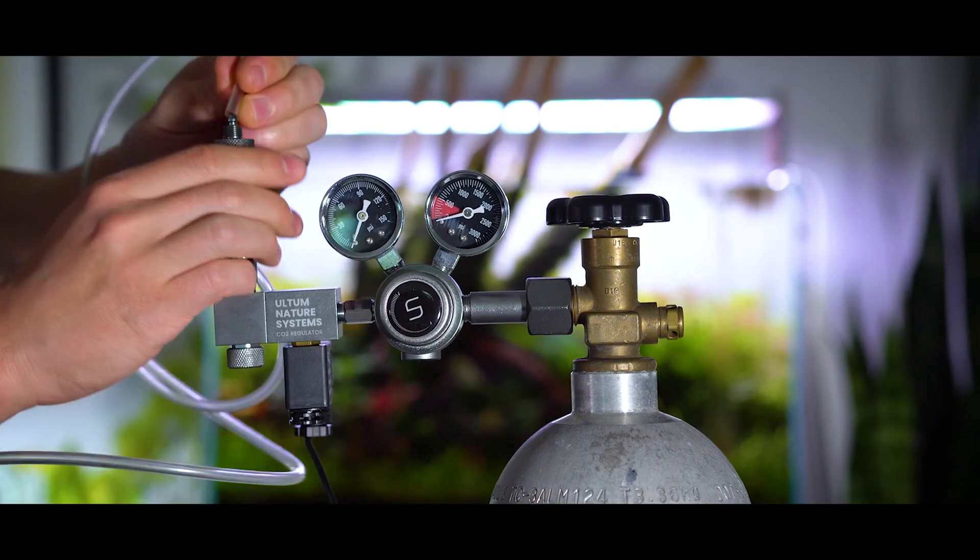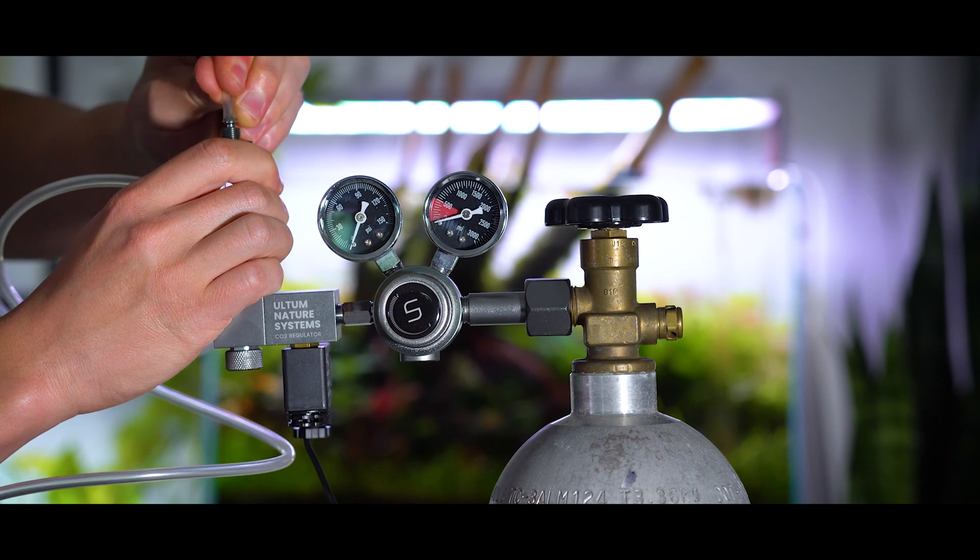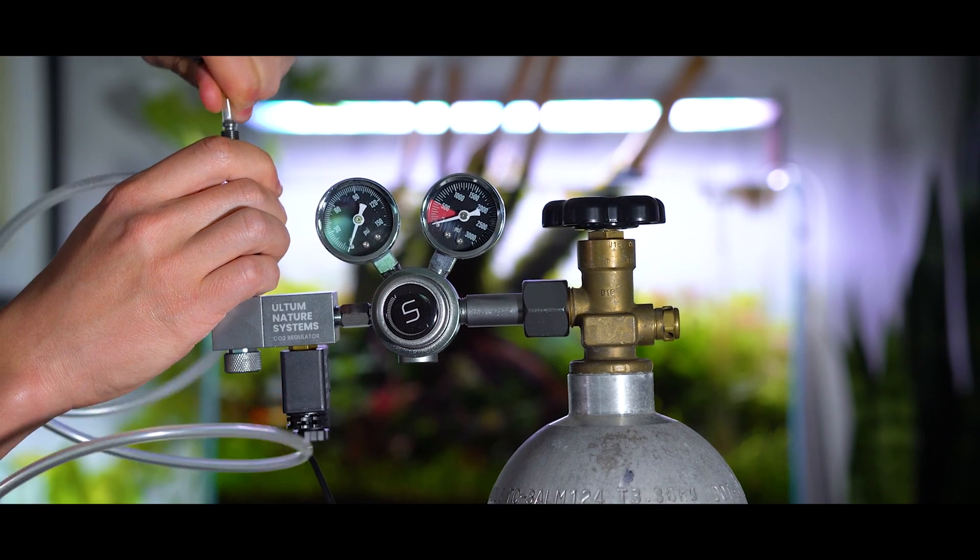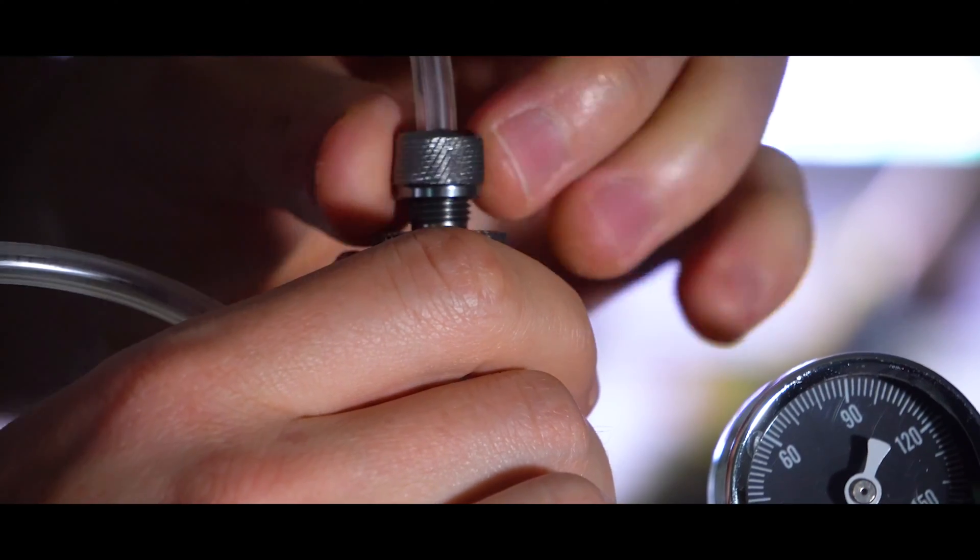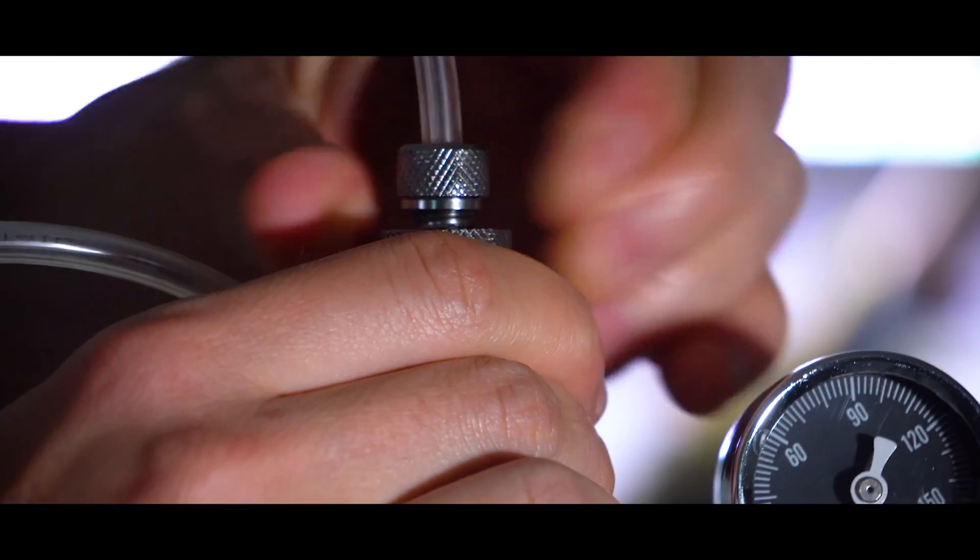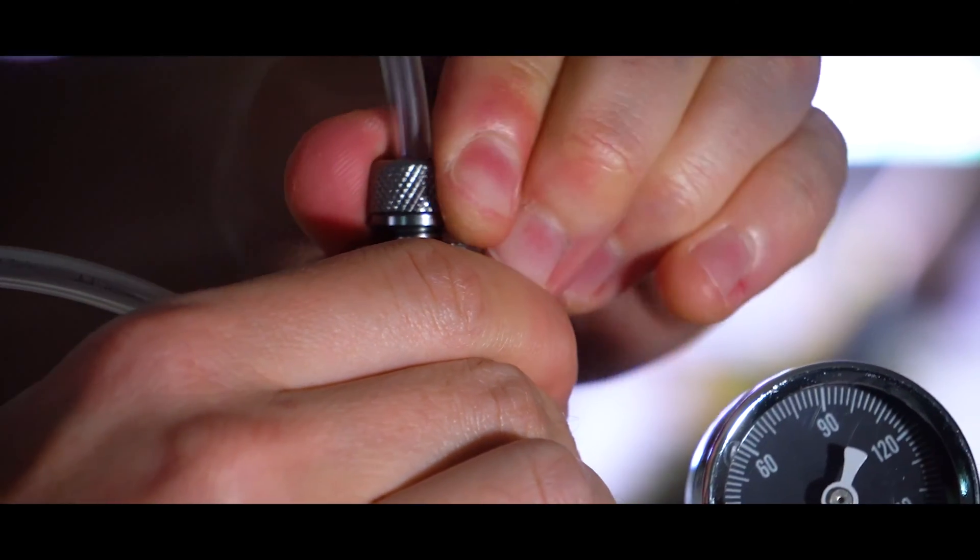For step five, we're going to attach our CO2 proof hosing. The difference between CO2 proof hosing versus regular airline hose is that it is not permeable to CO2 and it won't break down over time. Over time, regular airline hose gets very brittle and you get some CO2 that permeates out of the plastic.